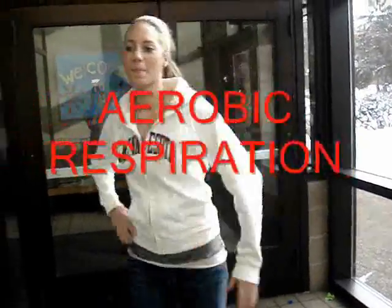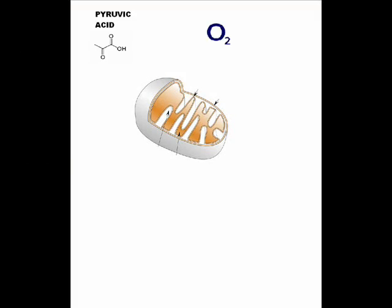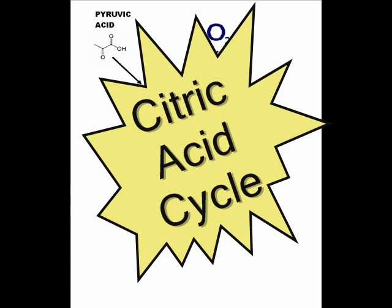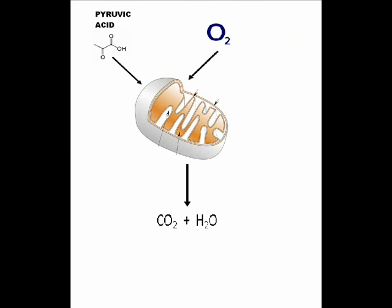Samantha is about to go on a run. Right now, she is using aerobic respiration. During aerobic respiration, pyruvic acid and oxygen enter the mitochondria and go through a series of reactions called the citric acid cycle and the electron transport chain. These reactions produce carbon dioxide, water, and up to 38 ATP.